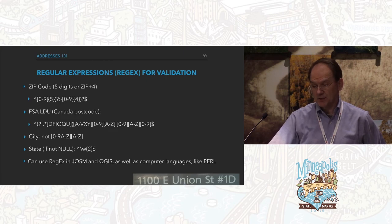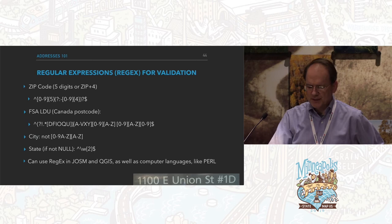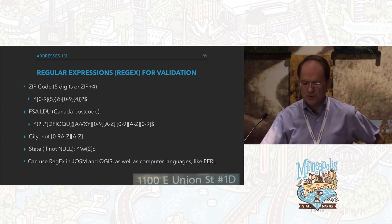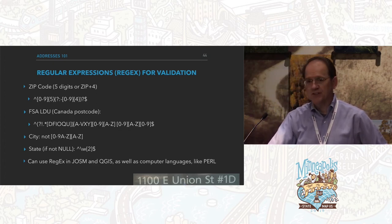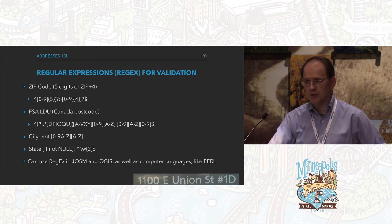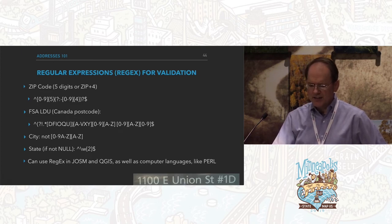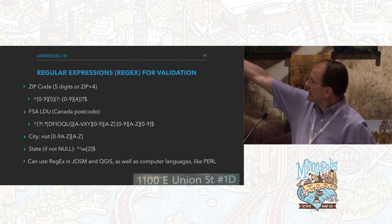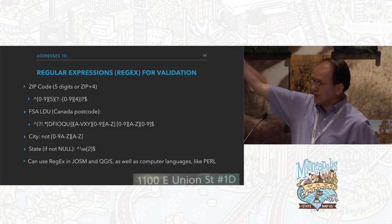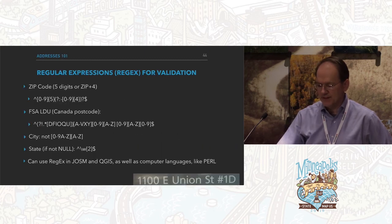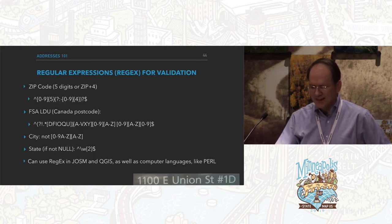For some really deep stuff: regular expressions for validation. This could be a whole topic in itself. Basically these are ways to check that something is matching a pattern — similar to using a wildcard star in an operating system, but on steroids. This allows you to match things and see if they are or aren't correct. For example, that's an FSA LDU Canada postcode regex — if it doesn't pass, it's wrong. They can be used in JOSM, QGIS, and of course Perl, Python, etc.